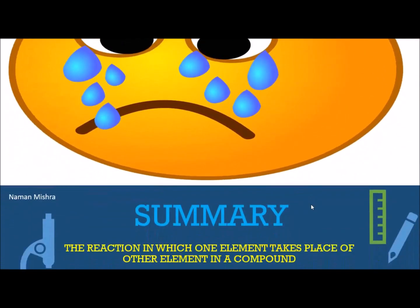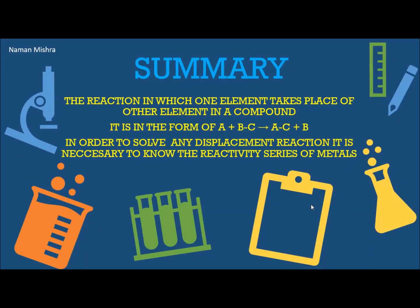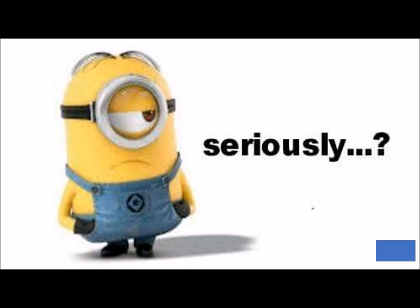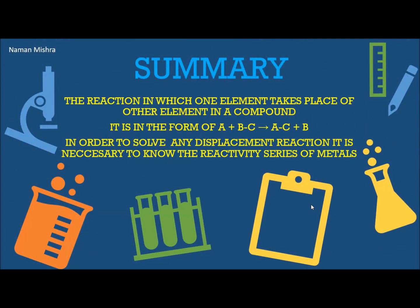Now the summary. The reaction in which one element takes the place of another element in a compound is called a single displacement reaction. It is in the form of A + BC, in which A replaces B, giving you AC + B. Most importantly, in order to solve any displacement reaction it is necessary to know the reactivity series of metals — whether for single or double displacement reactions.